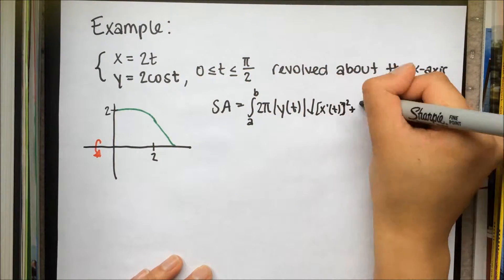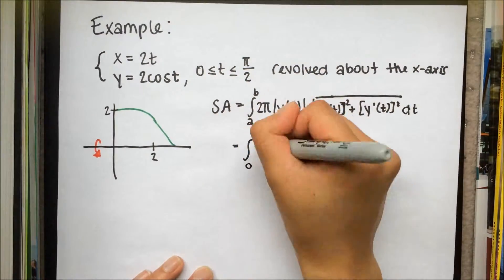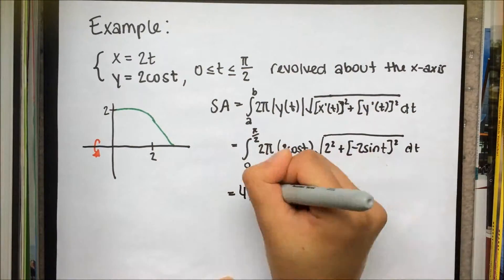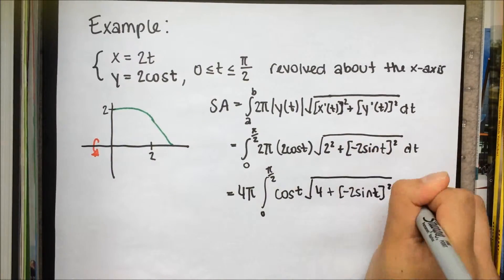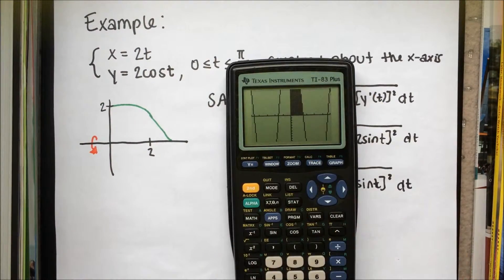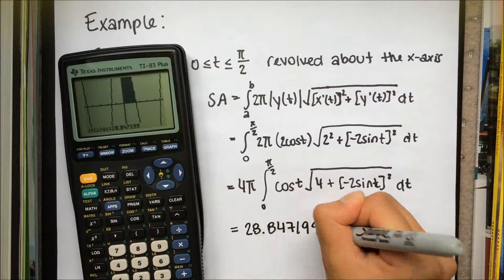Using the equation for surface area, we plug in the needed values. We then use a graphing calculator to integrate the area. We get 28.847199.